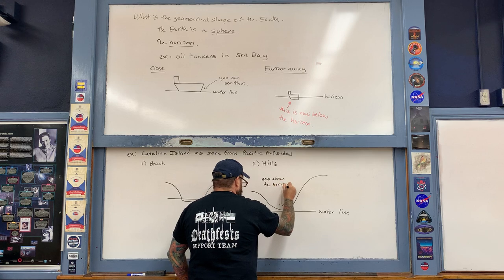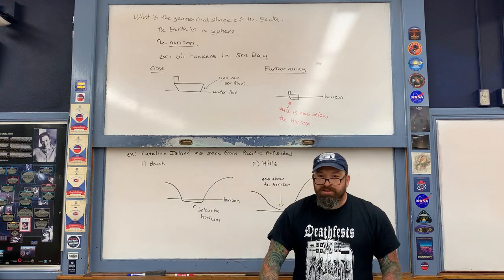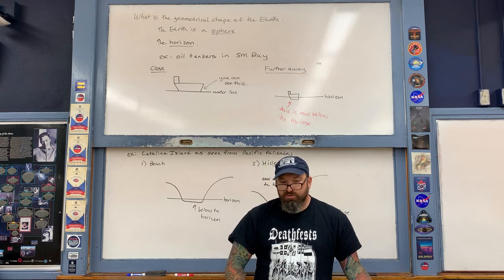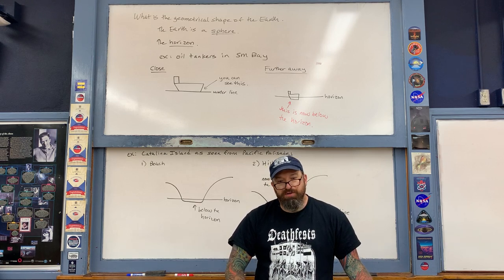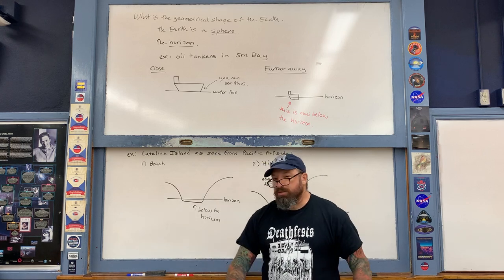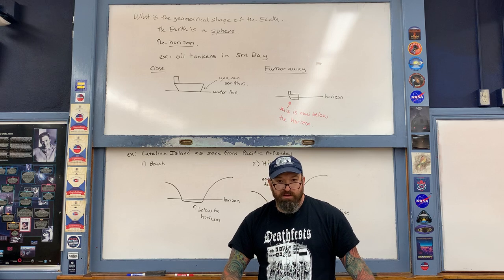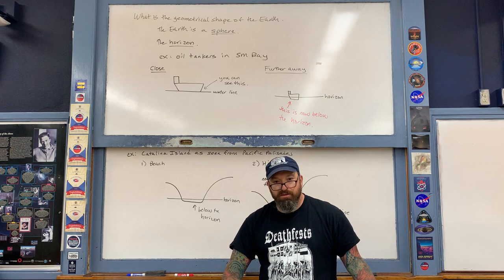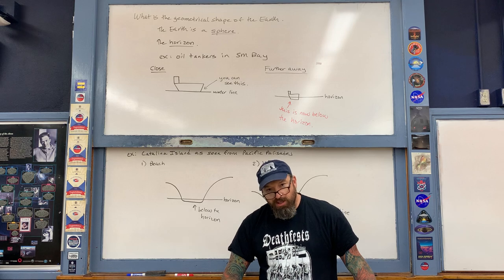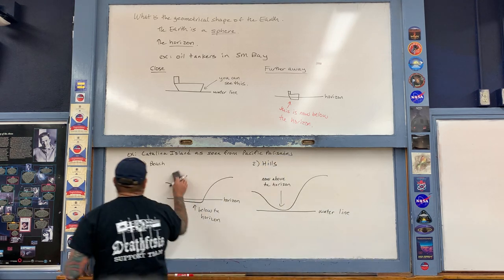The existence of the horizon proves that the Earth's surface is not flat — it proves that it's curved in some manner. But simple observations such as this do not definitively prove that the Earth is spherical. How in fact do you prove that the Earth is spherical? That's a little bit more subtle.